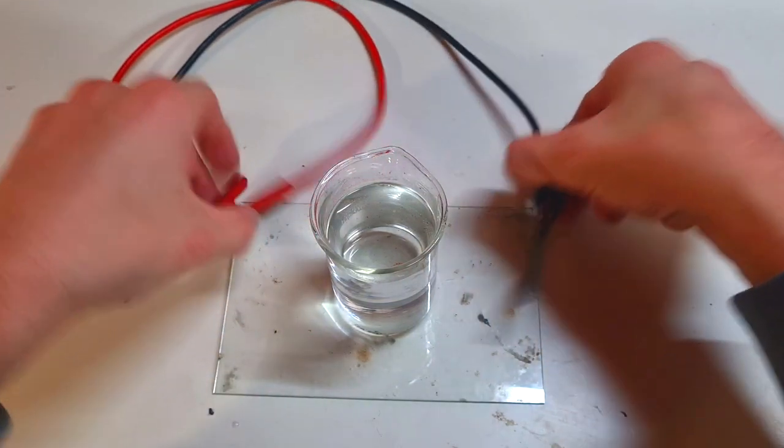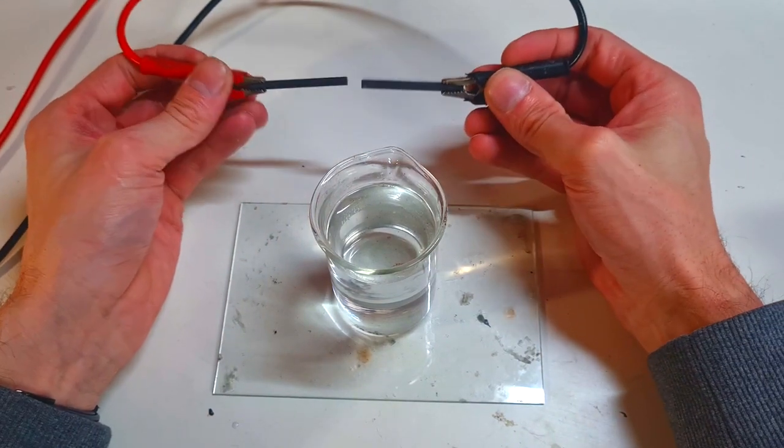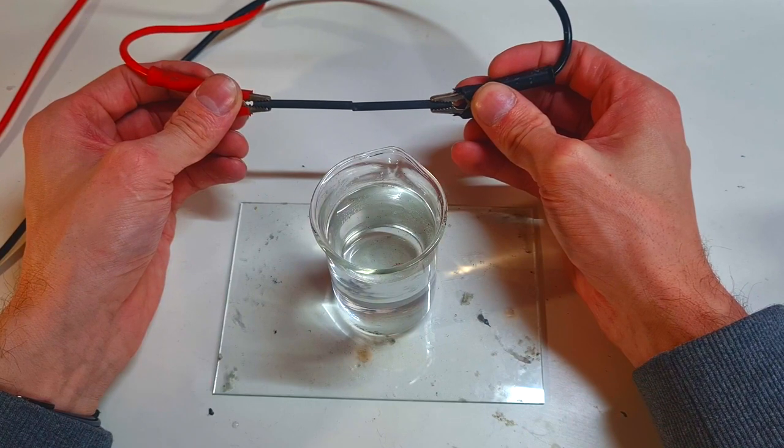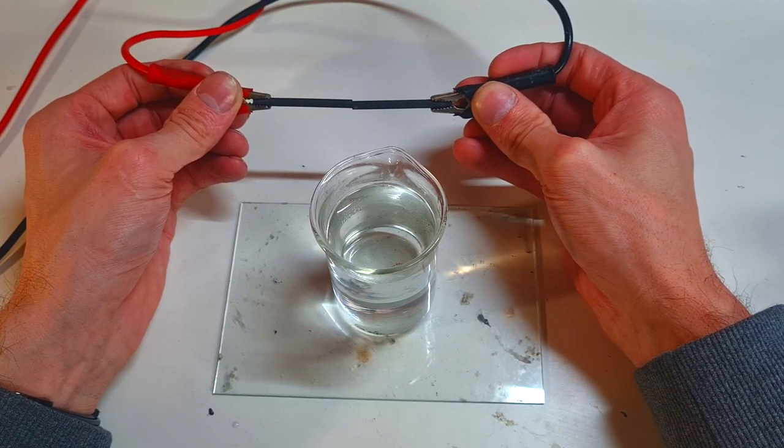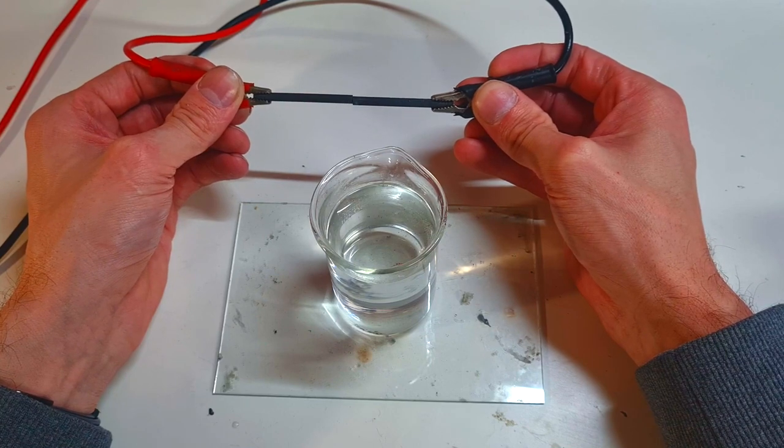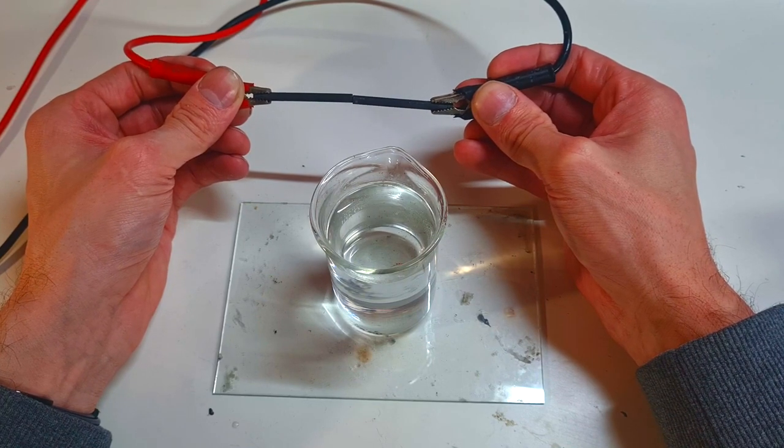The power of this carbon rod heater is 5.5 amps and 2.6 volts.